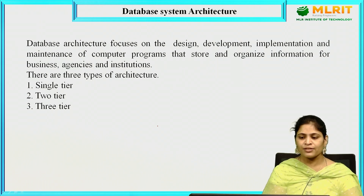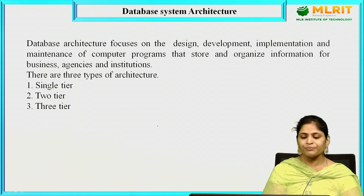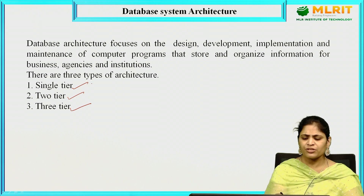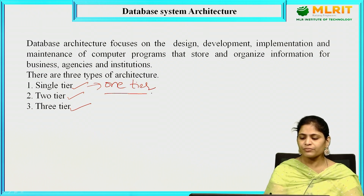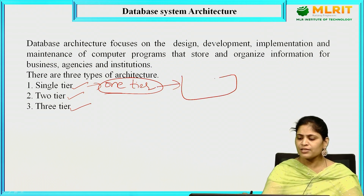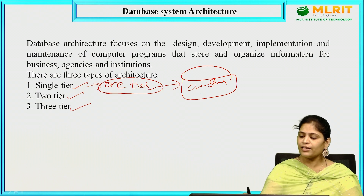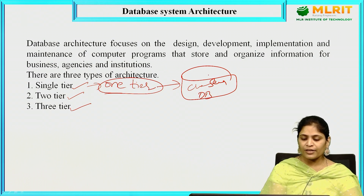Now let us deal with database system architecture. We have three types of architecture: single tier architecture, two tier architecture, and three tier architecture. Single tier architecture can also be called one tier architecture. Here the database, client, and server reside in a single system, a single device — that is what we call one tier or single tier architecture.